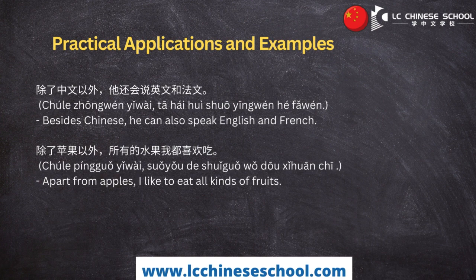除了…以外 is a versatile phrase used in both formal and informal settings. For example: 除了中文以外，他还会说英文和法文 (chúle zhōngwén yǐwài, tā hái huì shuō yīngwén hé fǎwén). It means 'Besides Chinese, he can also speak English and French.' The sentence includes Chinese, English, and French as languages the speaker can speak.